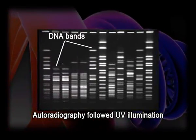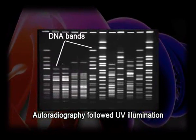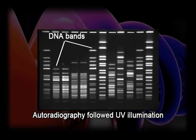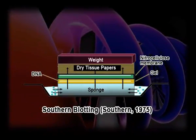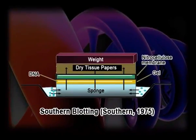After gel electrophoresis of DNA, the gel is stained with ethidium bromide, and when placed over an ultraviolet illuminator, bright pink bands are seen representing DNA fragments of different lengths that have migrated during electrophoresis. The next step is to identify a specific band from the gel carrying the gene of interest. This is achieved by a technique called southern blotting.